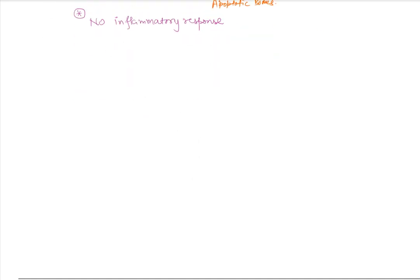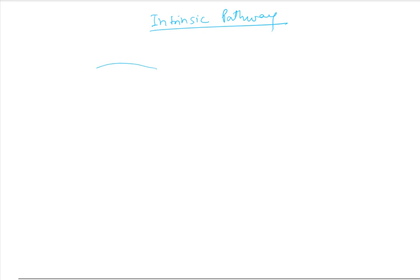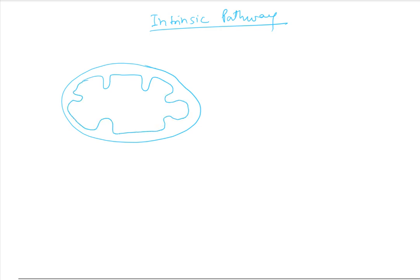Moving on, the intrinsic pathway takes place from the mitochondria. The mitochondria has an intermembrane space, and the structures present there are cytochrome C. Normally, cytochrome C is present in the intermembrane space.